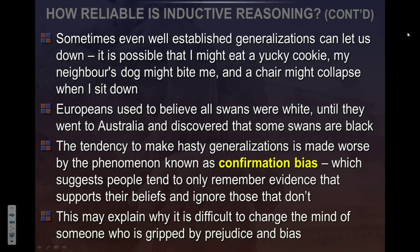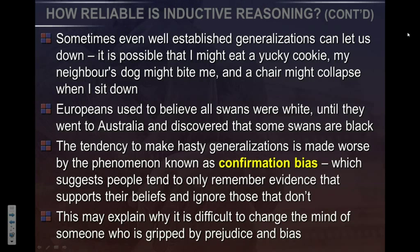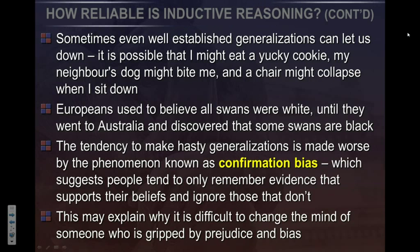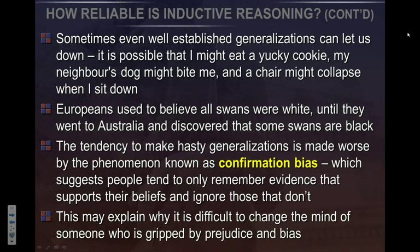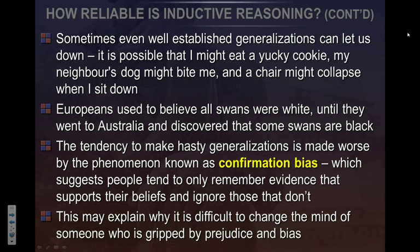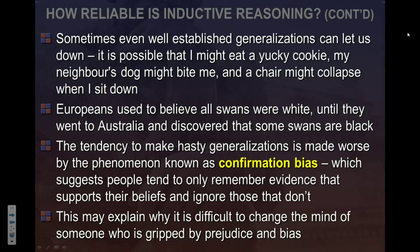It's possible you're going to eat a yucky cookie one day, your neighbor's dog might bite you, and the chair might collapse under you. Europeans used to believe all swans were white until they got to Australia and encountered a black swan. This idea of hasty generalization is connected to the phenomenon known as confirmation bias, which suggests that people want their beliefs to be true — so when they encounter a black swan, they're often willing to dismiss that evidence rather than accept it and change their conclusion. Someone gripped by prejudice will be hard-pressed to change their mind if they're locked into a hasty generalization and confirmation bias. Those are things you need to guard against.